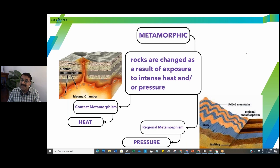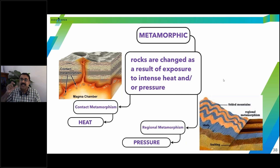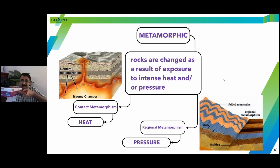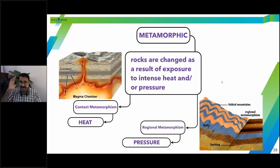Regional metamorphism occurs in a region due to pressure. In a later chapter, we'll cover plate boundaries. The Earth's outermost layer is like an eggshell — thin but made of many moving pieces floating on magma. When two plates push toward each other, the pressure increases, and this causes regional metamorphism. For example, limestone under intense pressure turns into marble, and shale turns into slate.